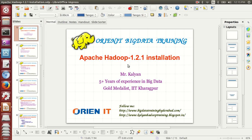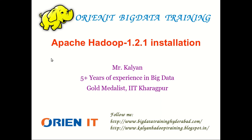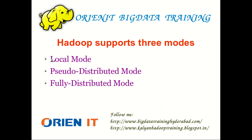The prerequisites required are Ubuntu, Java, SSH, and the Hadoop tarball. Apache Hadoop supports three types of installations: local mode, pseudo-distributed mode, and fully distributed mode. Local mode and pseudo-distributed mode are for developers and testing purposes. Fully distributed mode is for production. Today we are going to install in pseudo-distributed mode using VirtualBox with Ubuntu.